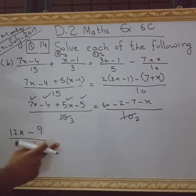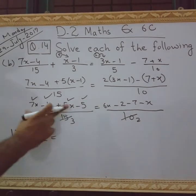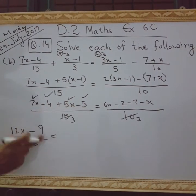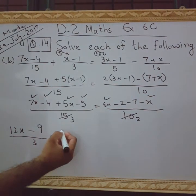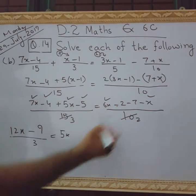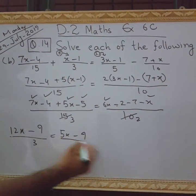I mean to say we will get this solution till yet. 6x minus x, we will get 5x. Minus 2 minus 7, we will get 9 minus 9 divided by 2. Now, we are able to do the cross multiplication.